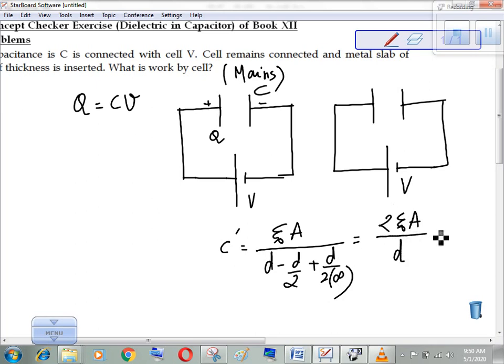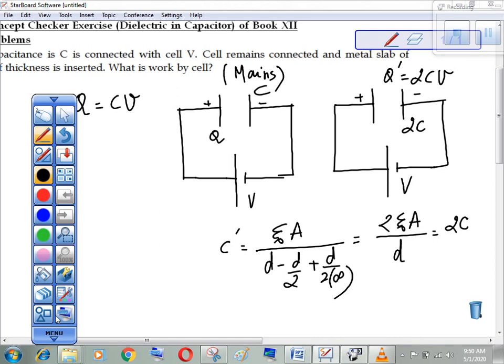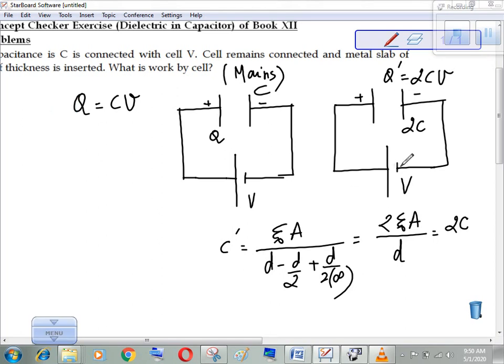So the new capacitance will become 2C. So the new charge will become 2CV. Now you can see cell drew charge. 2CV is the final charge and the previous charge was CV.